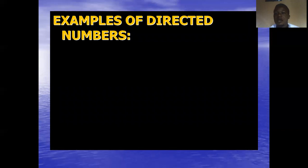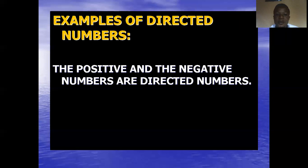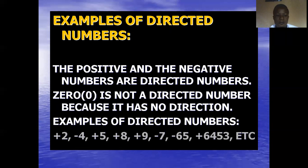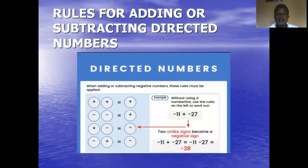Now let's see some examples of directed numbers. There are many of them — you can have positive and negative directed numbers. Take notes please: zero is not a directed number because it has no direction. Zero has no direction; as a result, it is not a directed number. Examples of directed numbers include positive 2, negative 4, positive 5, positive 8, and so on. All numbers that are either positive or negative but not neutral are called directed numbers.